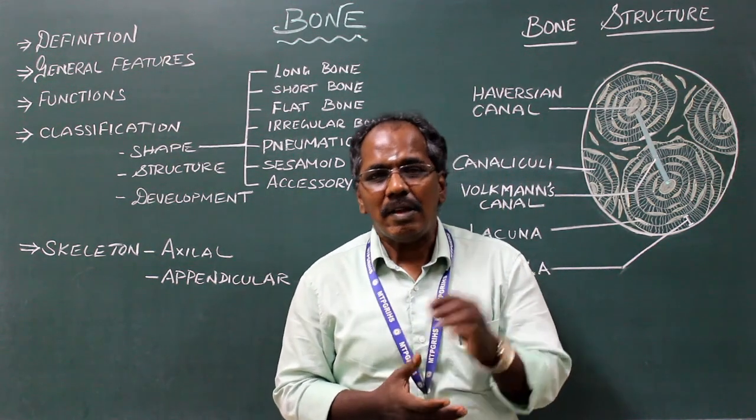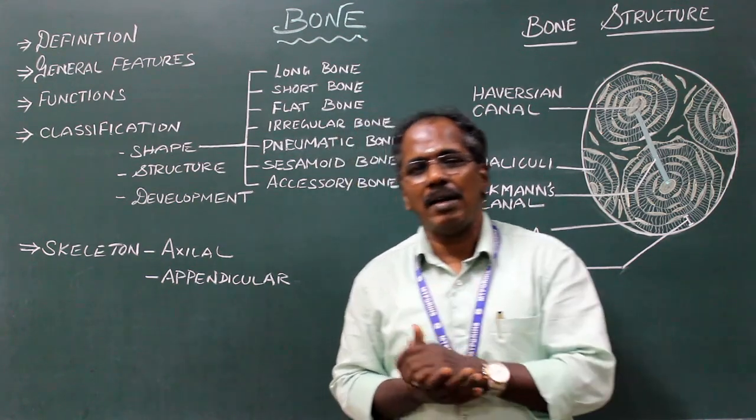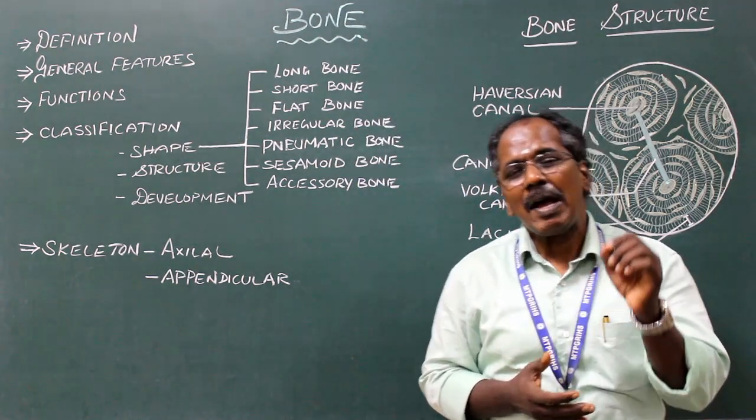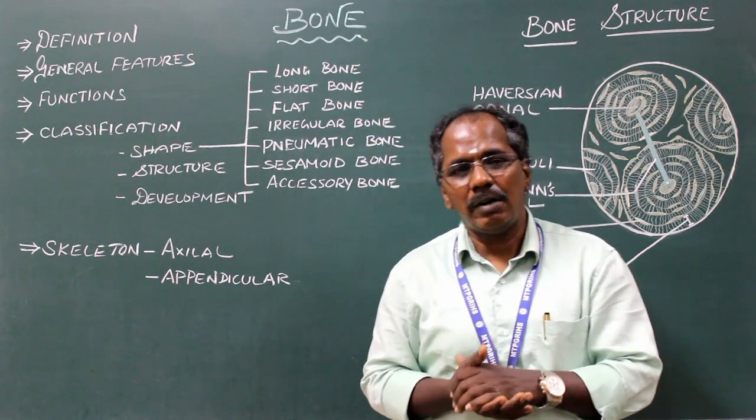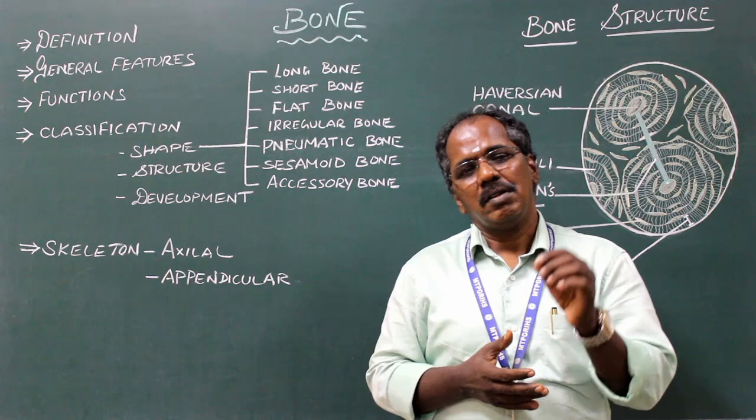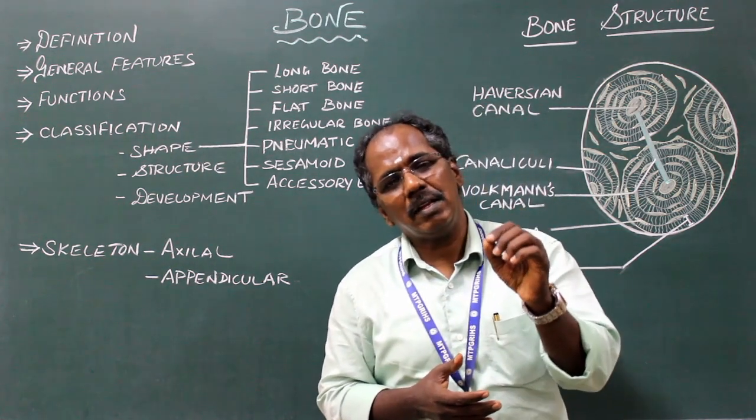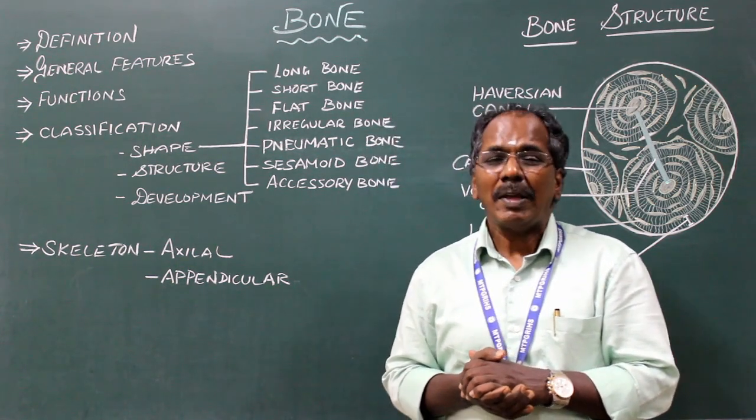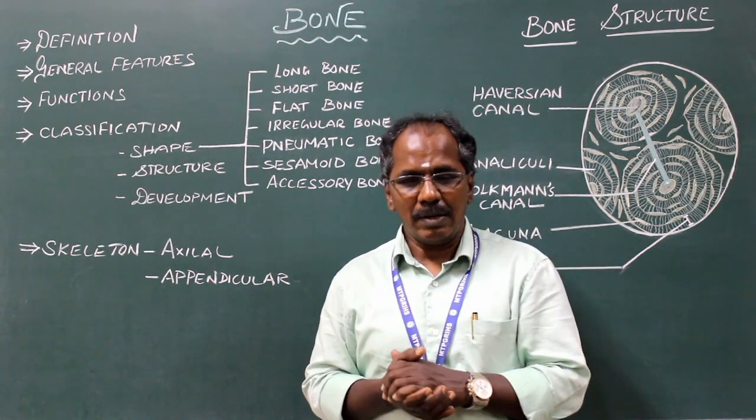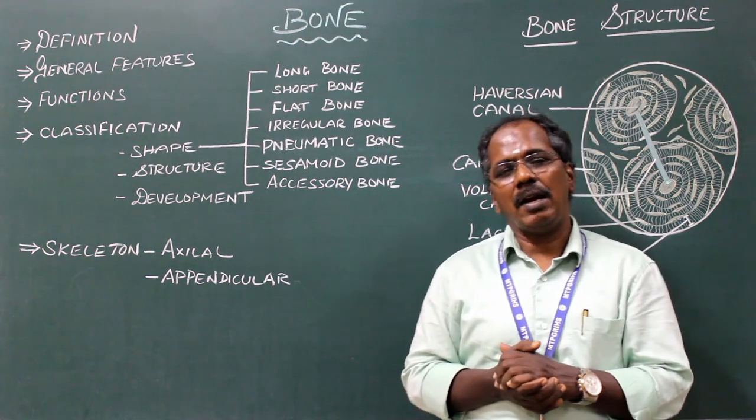General features. It is derived from embryonic mesenchyme. It is highly vascular. It consists of organic materials as well as inorganic elements mainly calcium, phosphorus, magnesium and iron.